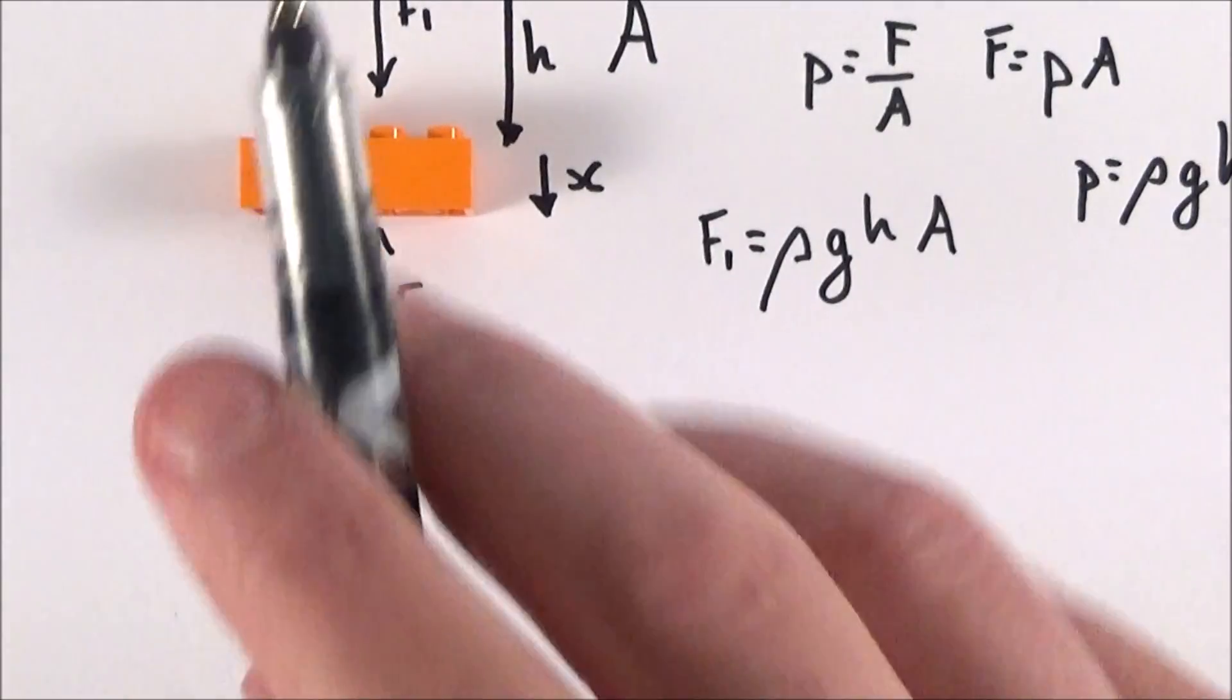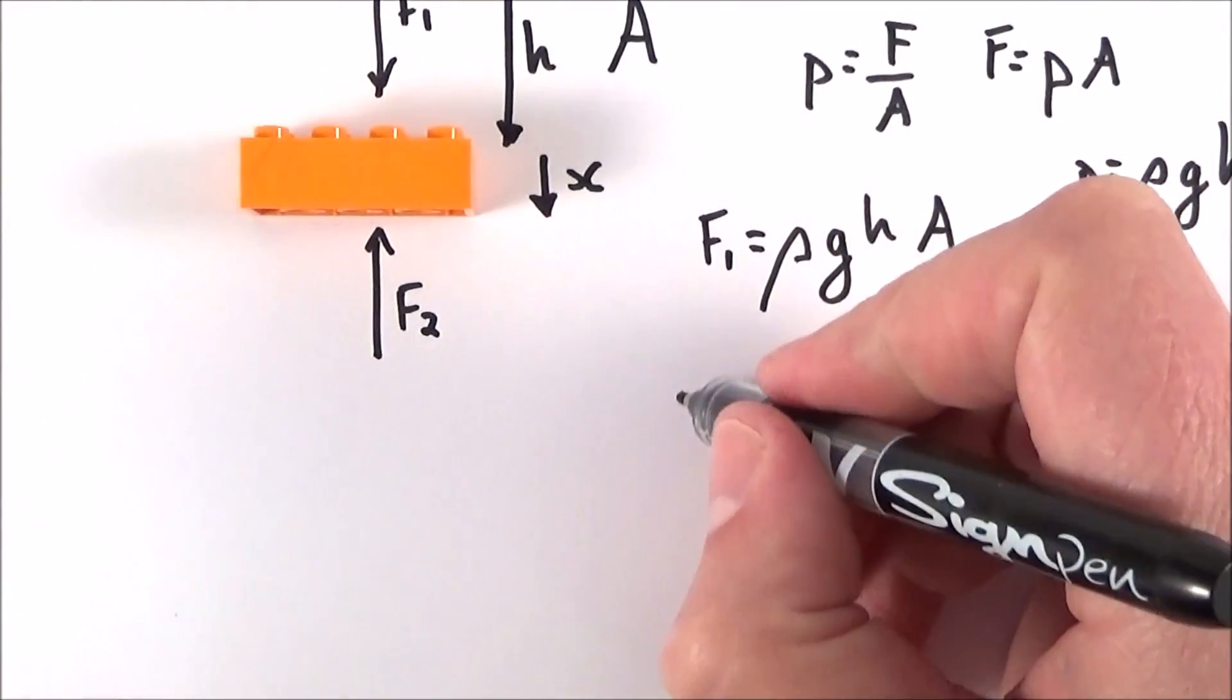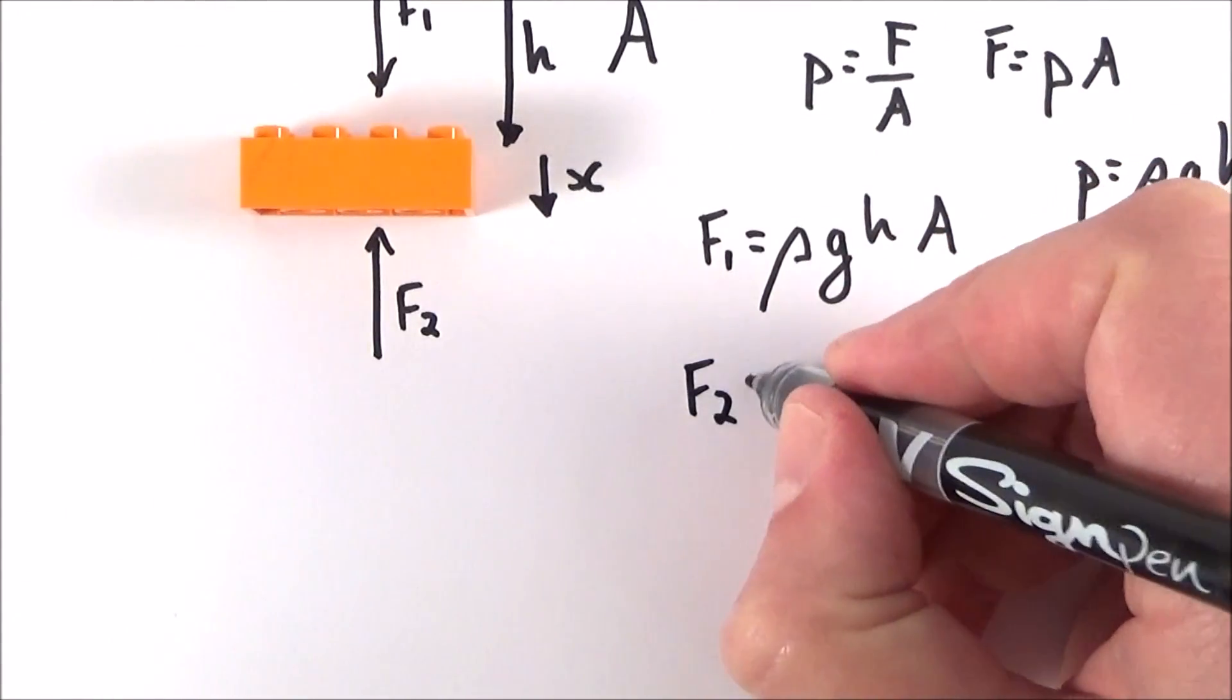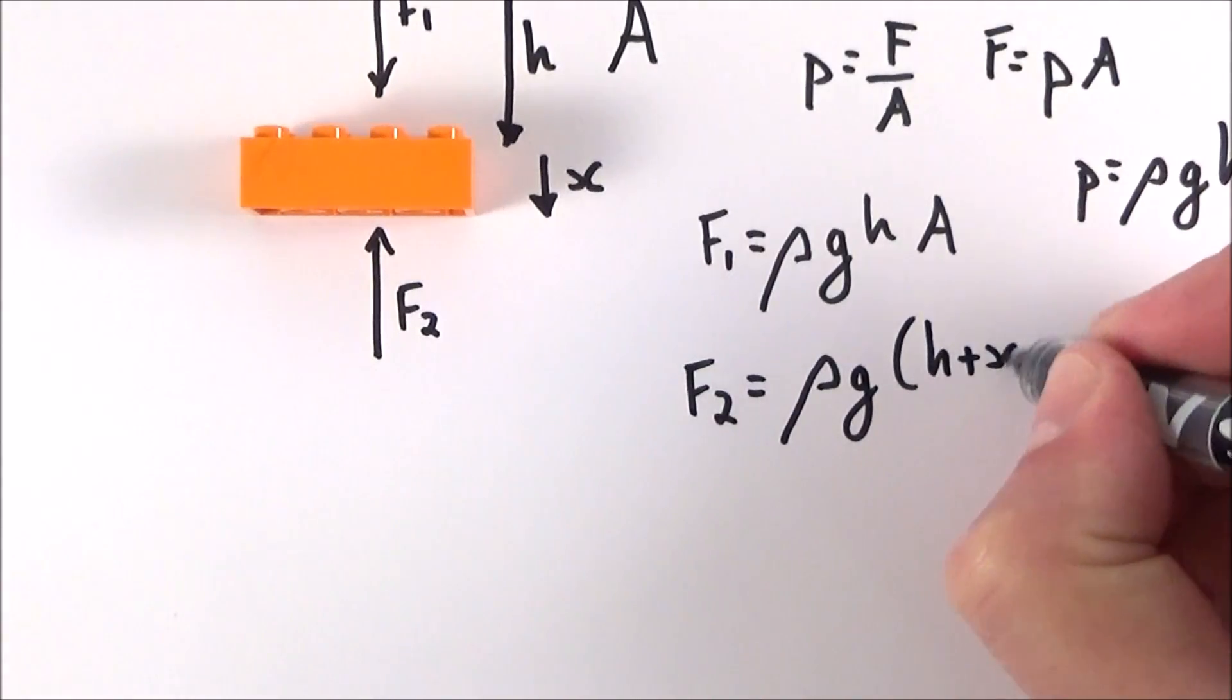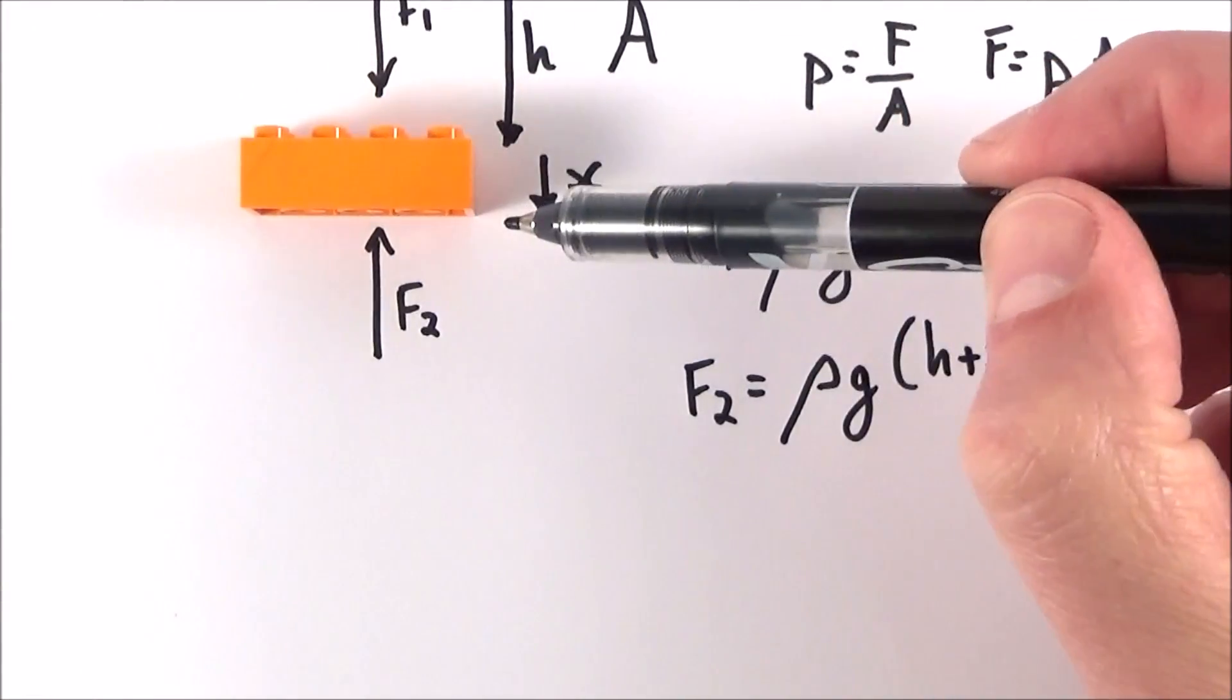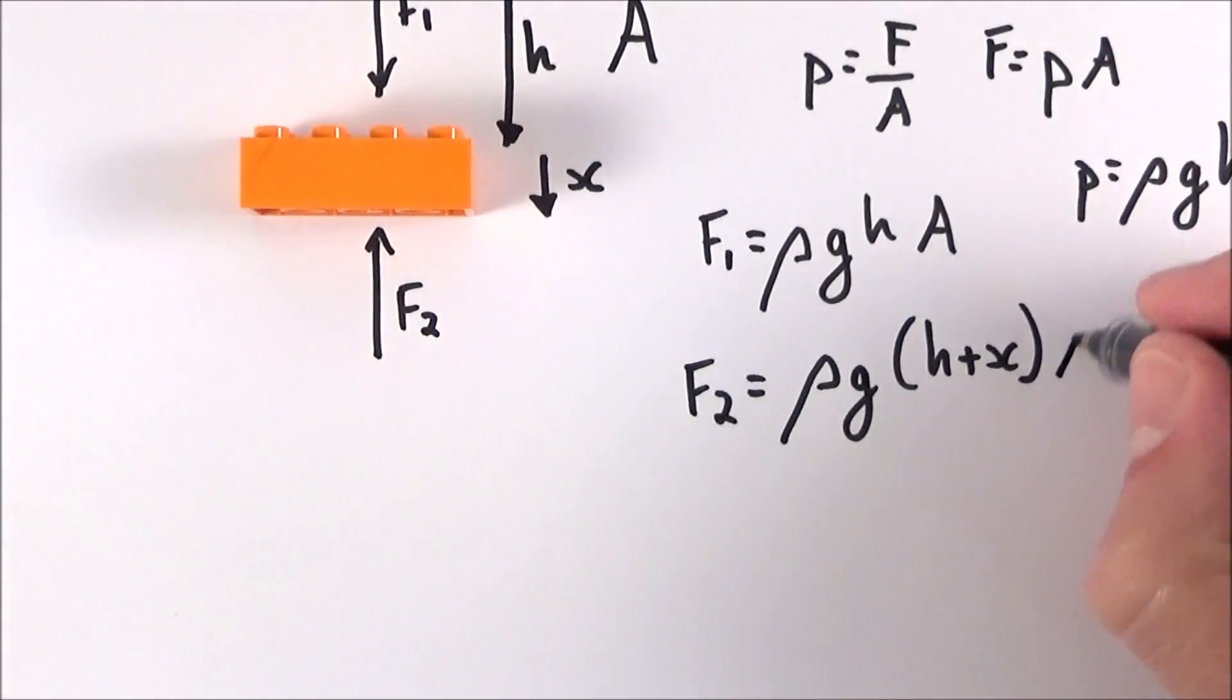If everything's nicely in equilibrium, we've also got a force acting upwards at the bottom and we're going to call this F2. Now here the pressure is equal to ρg(h+x) because the bottom is at a lower depth than the top, and this is going to be the pressure again multiplied by A.